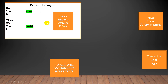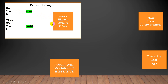Now let's talk about how to form a negative sentence in the present simple. We use 'does' for the singular subject and 'do' for the plural one. For example: He doesn't play football every day. She doesn't cook every day. They don't play football every day.